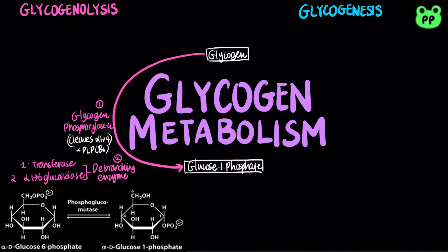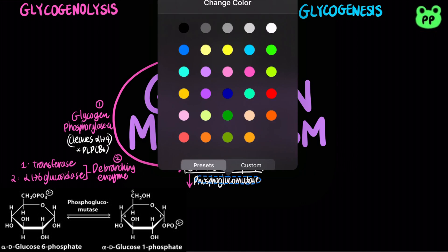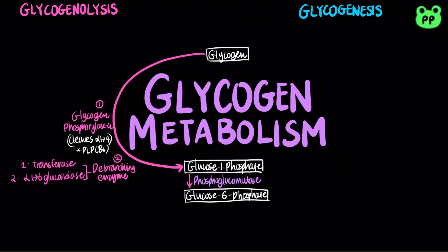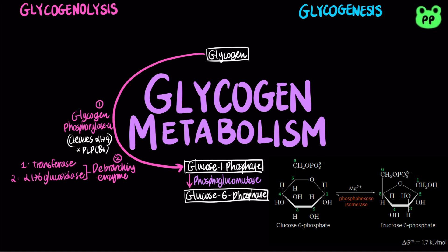Glucose-1-phosphate is then converted to glucose-6-phosphate by the enzyme phosphoglucomutase. In skeletal muscles, glucose-6-phosphate would enter glycolysis and serve as an energy source for muscle contraction.